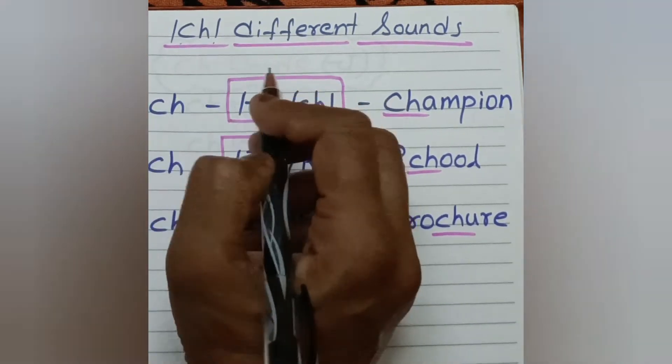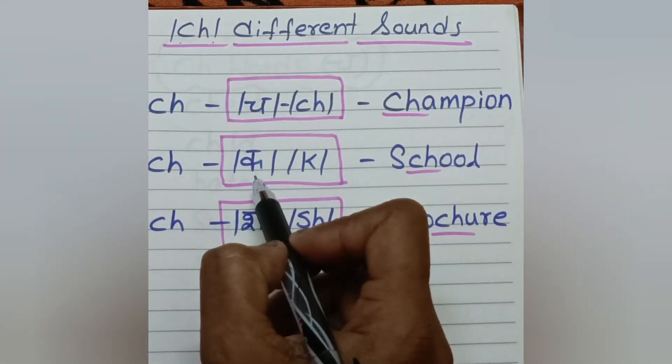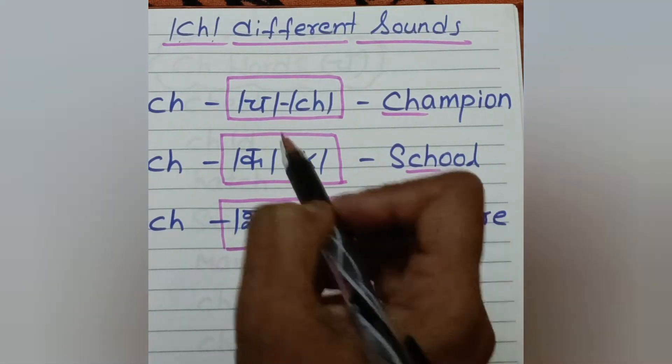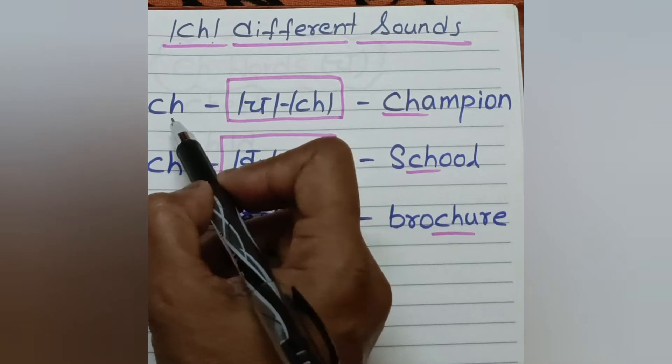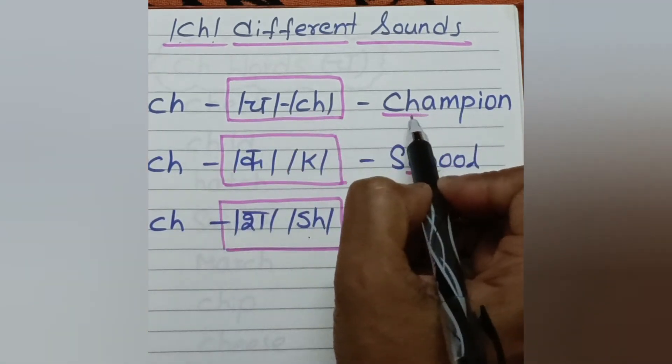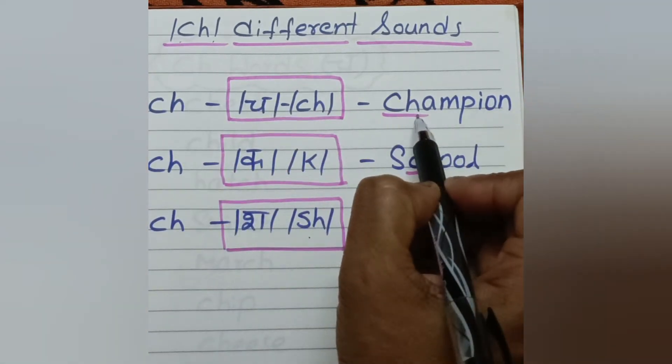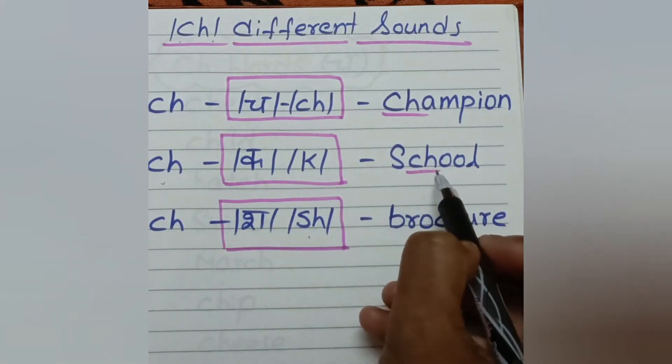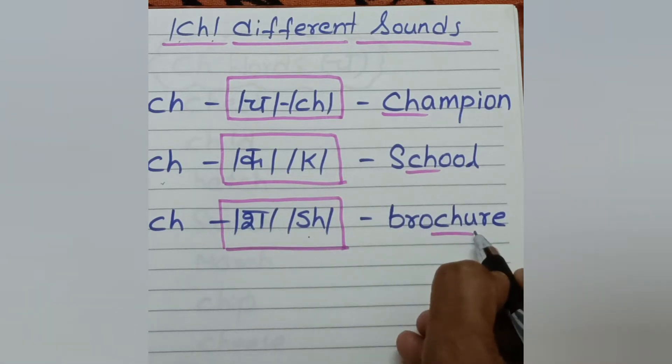In few words, we read as K and in few words, we read as SH. Like in Champion, CH sound is CH. And in School, CH sound is K. And in Brochure, CH sound is SH.